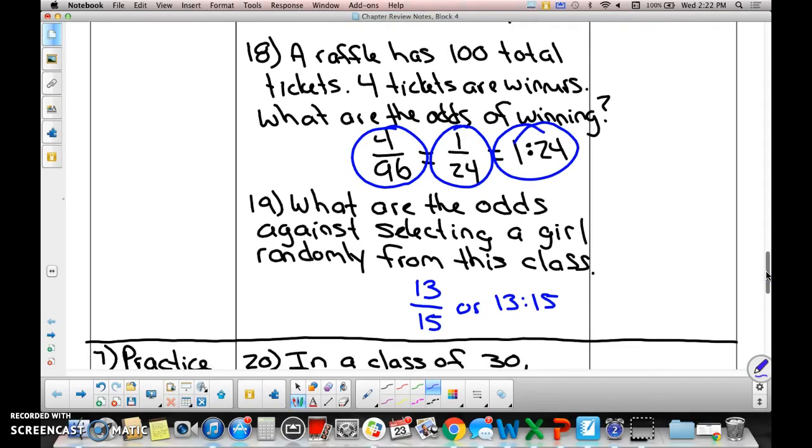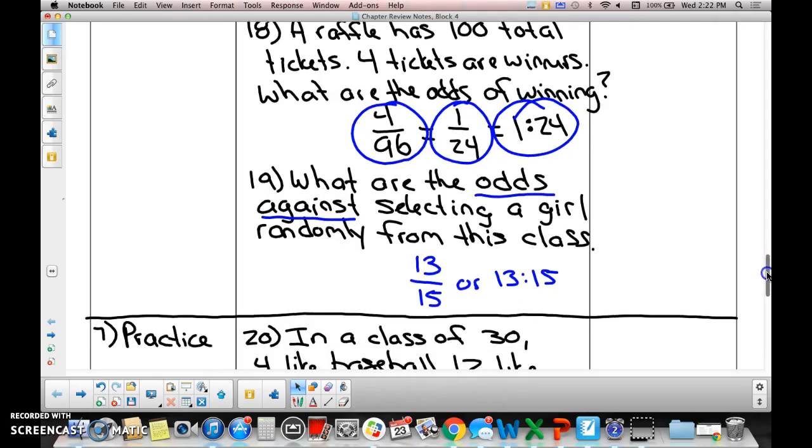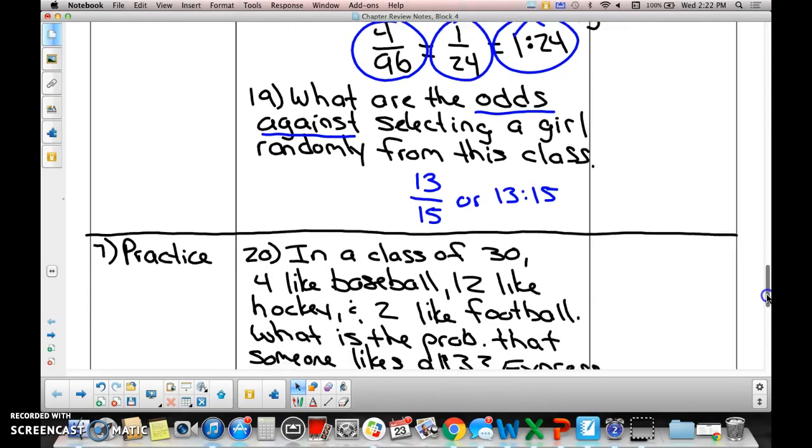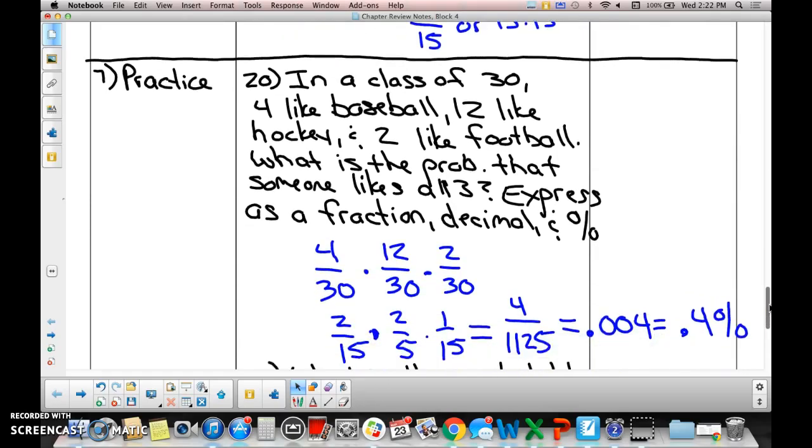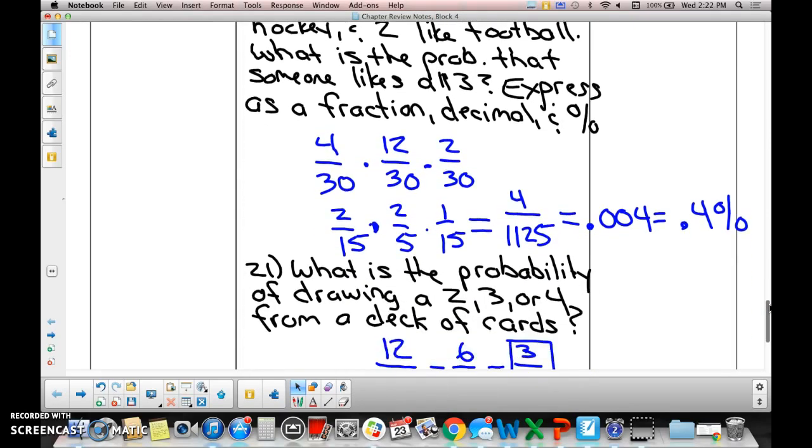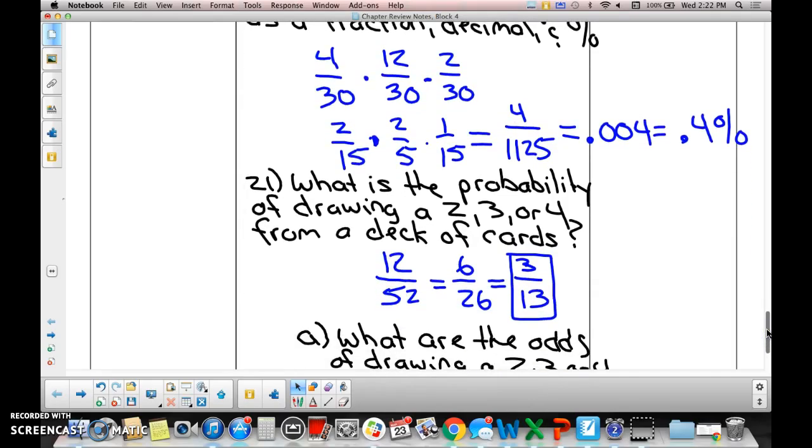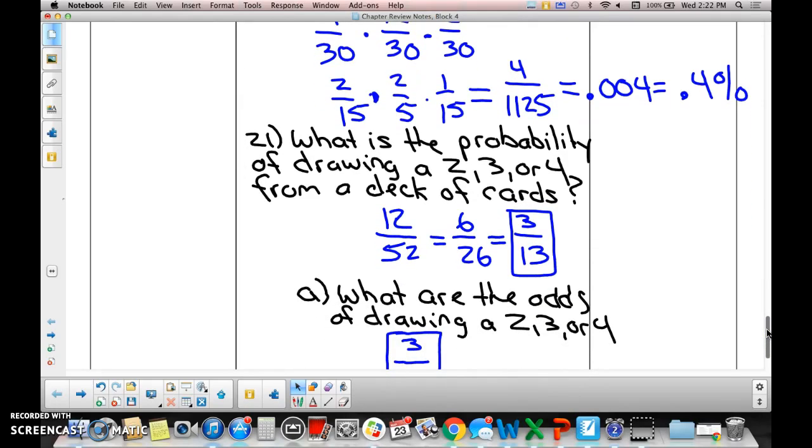Look at number 19. This one says, what are the odds against? Then you know to use the odds against formula, which is just the reverse of the odds formula. Numbers 20 and 21, make sure you look at them. I'm going to stop the video here in a second. They're just examples of problems that you will see on the test. 21A exists too. Anything else before I stop it?